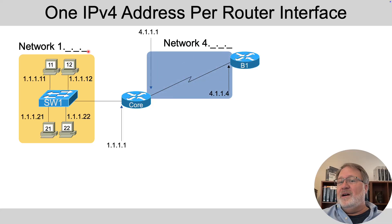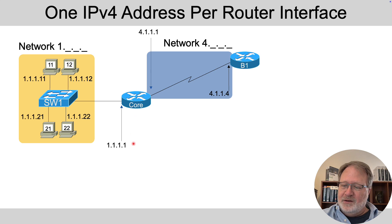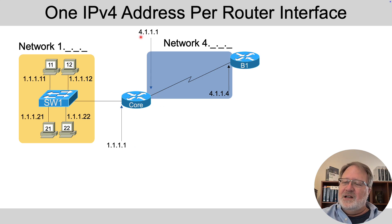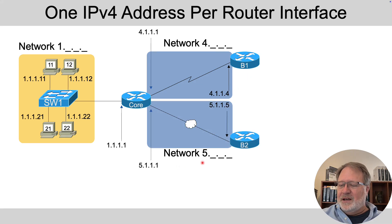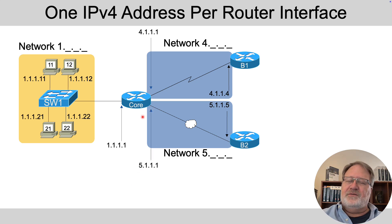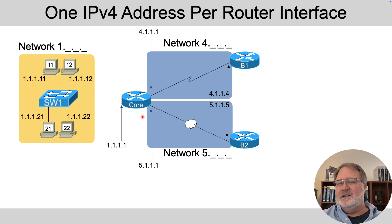If you have other interfaces on a router, they're in different subnets. The dividing line between groups of addresses called subnets or networks is the router itself. This core router has an address that begins with 4 in network 4, and on this third set of addresses beginning with 5 — network 5 — it's got address 5.1.1.1 on this interface. That's a general idea of how per-interface addressing works with IPv4, and IPv6 follows this same standard.